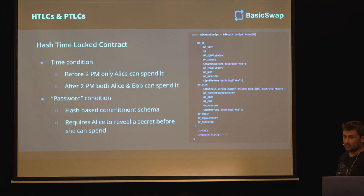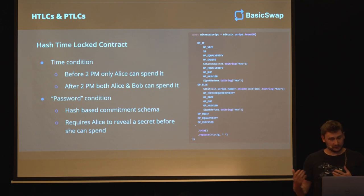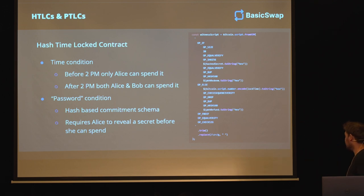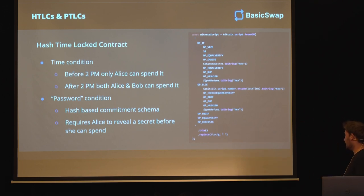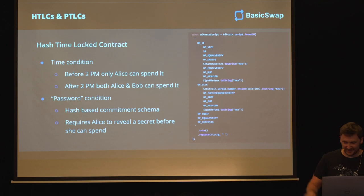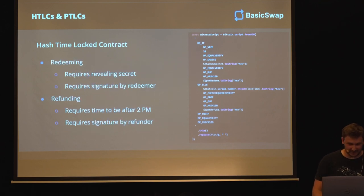In this case we'll make this a condition to spend the money from one of the contracts. And on the right you can see, basically, one of these contracts as code. This is one for Bitcoin. It's only 20 lines of code, so it's relatively simple to understand if you ever want to take your time and look into that more deeply.